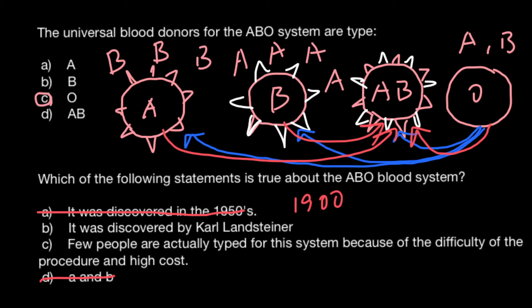Answer C is not true — the procedure is very simple and the cost is very low. So we are left with only one answer: B — it was discovered by Karl Landsteiner. I also want to note that other people around the same time independently discovered this blood group system, and Karl Landsteiner was credited later and received the Nobel Prize. He discovered three blood groups: O, A, and B.